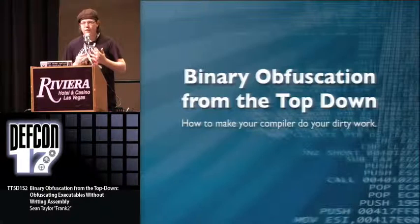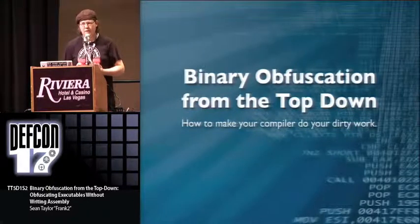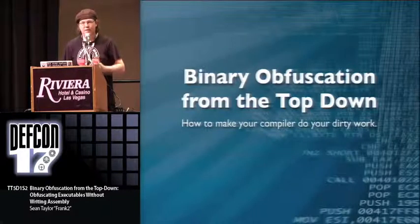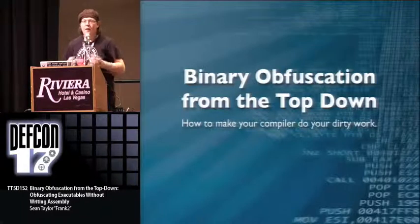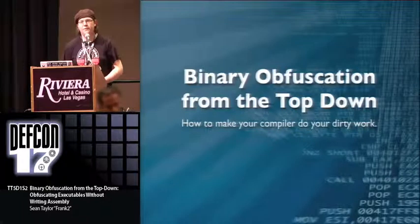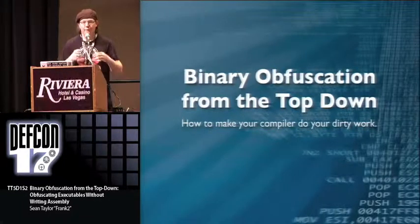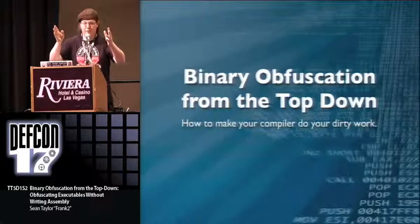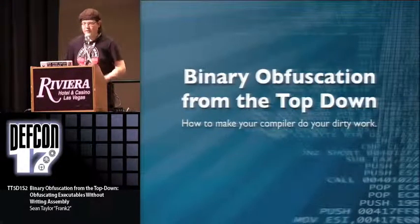Doing binary obfuscation after compilation is generally your best bet because you have ultimate control over the assembly. However, there are ways to obfuscate your binary without doing all that — you can write specifically crafted high-level code to push against your compiler, make it freak out, and spit out really weird code. That's basically what we're going to talk about today.